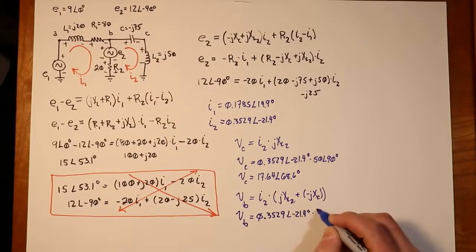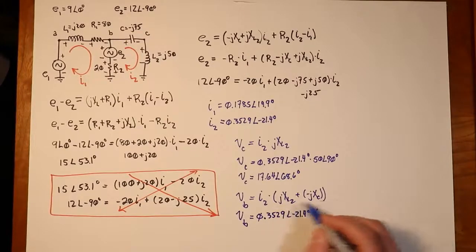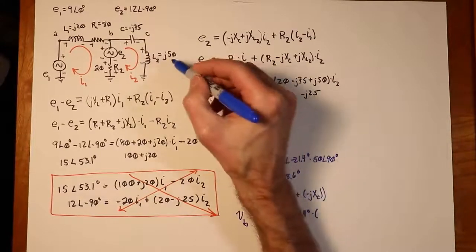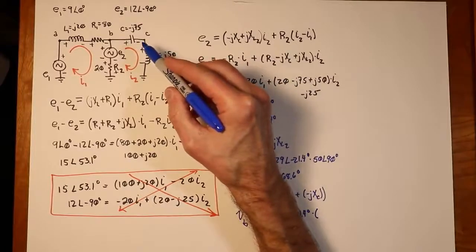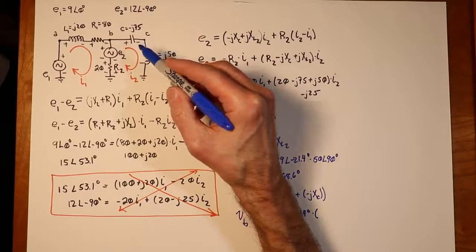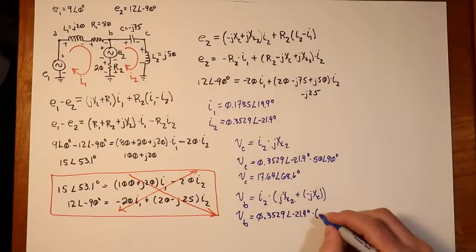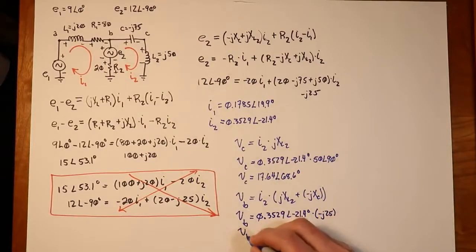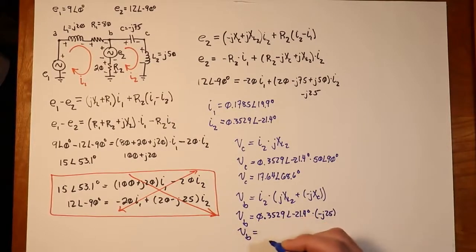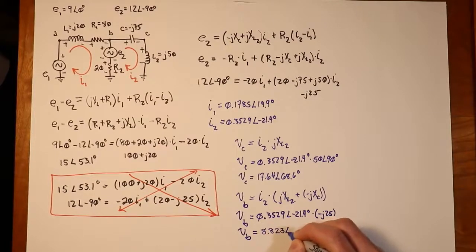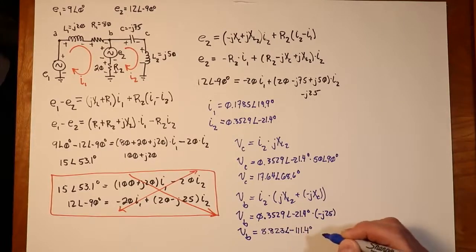And then, this value here, the two reactances, you've got a J50 and a minus J75, which is just going to give us minus J25. We found that actually back there. And running that through, we'll find that we get just shy of 9 volts. It's actually 8.823 at an angle of negative 111.4.